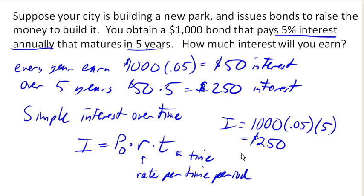Now what that means in terms of this bond is that we loaned the city $1,000. Each of those 5 years, they sent us $50 in interest, and then when the bond matures in 5 years, they'll send us back our original $1,000 as well. So at the end of 5 years, we will have our original $1,000 plus the $250 in interest.